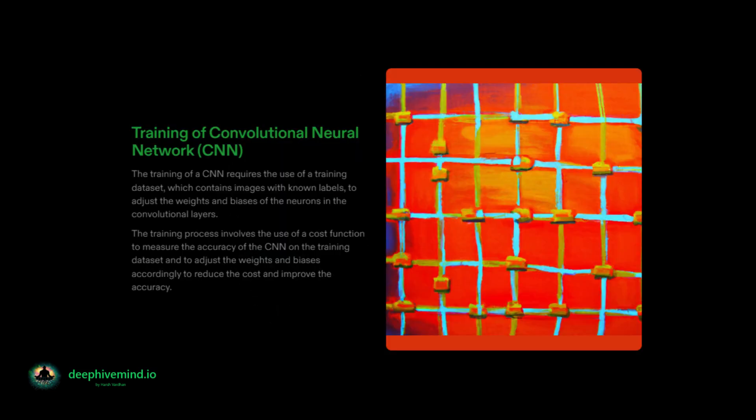Overall, training a CNN involves preparing the data, passing the data through the network, adjusting the weights and biases of the network to minimize the error, and fine-tuning the network to achieve optimal performance.